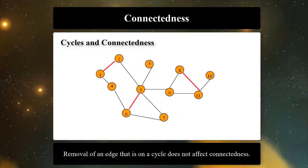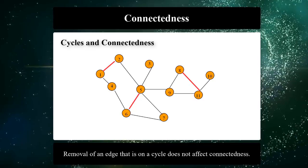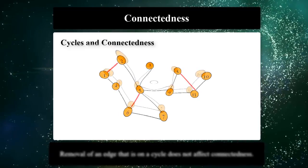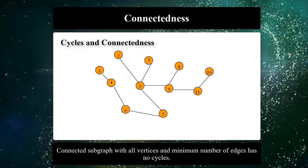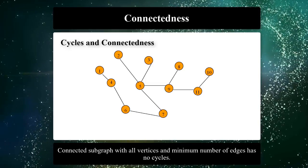If a graph is cyclic, removal of an edge that is on a cycle does not affect connectedness of the graph. Therefore, a connected subgraph with all vertices and minimum number of edges has no cycles.